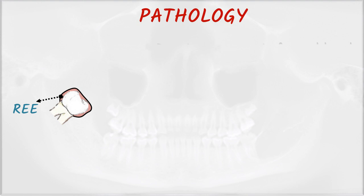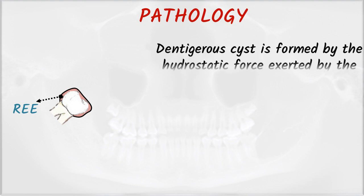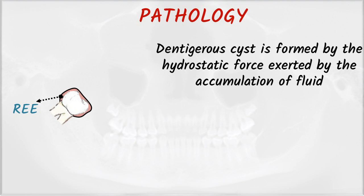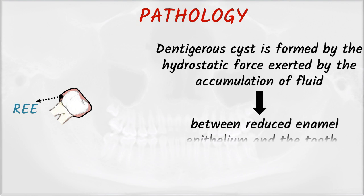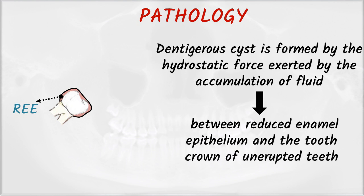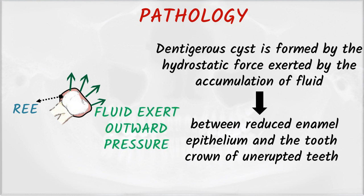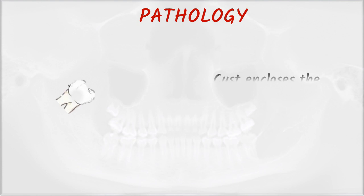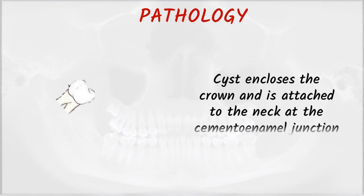How is the cyst actually formed? Under pathology, the dentigerous cyst is formed by the hydrostatic force exerted by the accumulation of fluid between the reduced enamel epithelium and the tooth crown of unerupted teeth. As you can see in the figure, fluid exerts outward pressure. Remember two points: first is hydrostatic force, and second is that the cyst is associated with the crown of unerupted or impacted teeth.